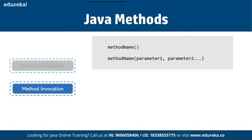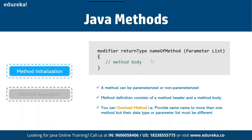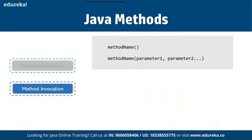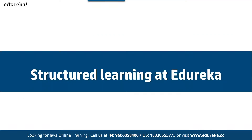Now talking about method invocation. To use a method, it needs to be invoked — invoking a method or calling a method is one and the same thing. As you can see on my screen, we are invoking a method here, and what we have done is we are defining a method and then invoking the method by its name. When a program invokes a method, the program control gets transferred to the called method. It can be called either by value or by reference.